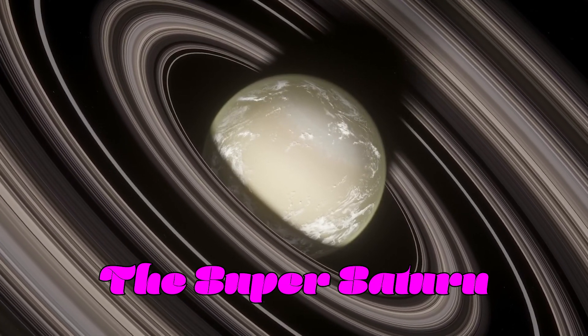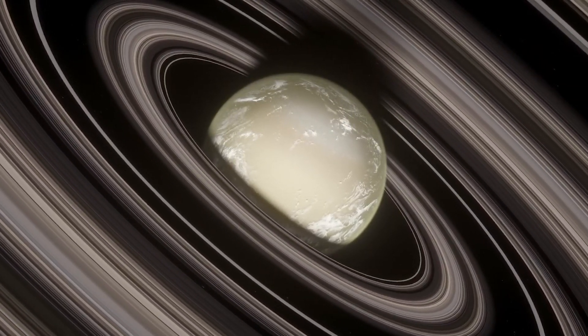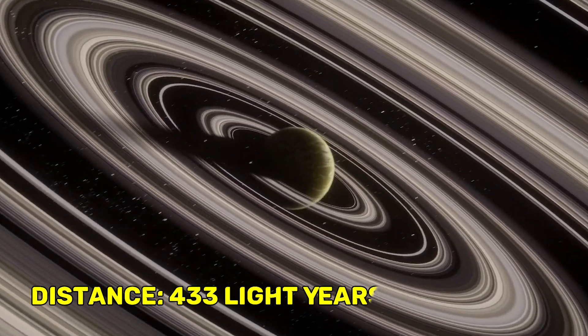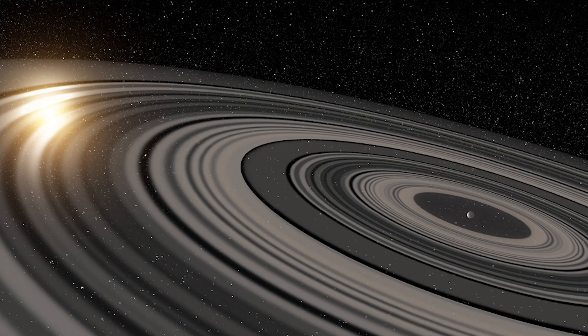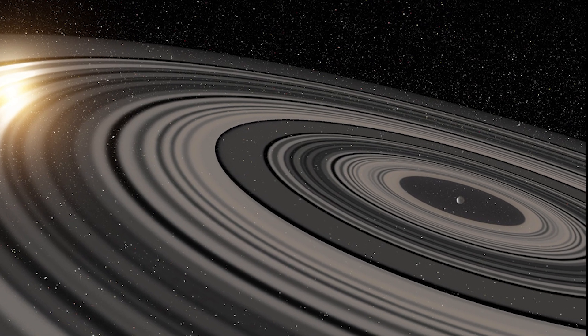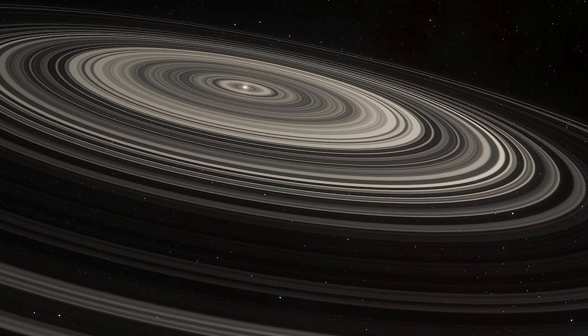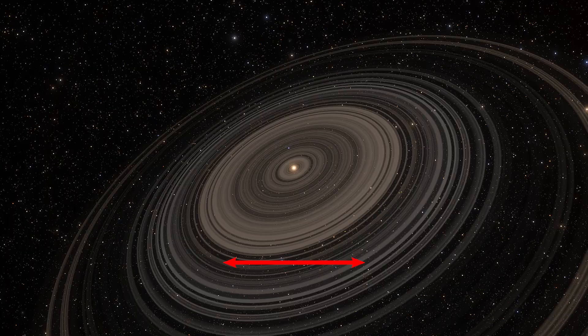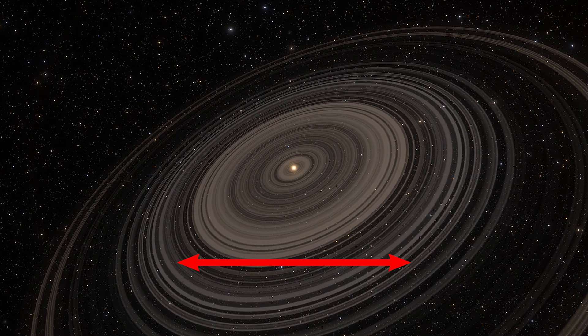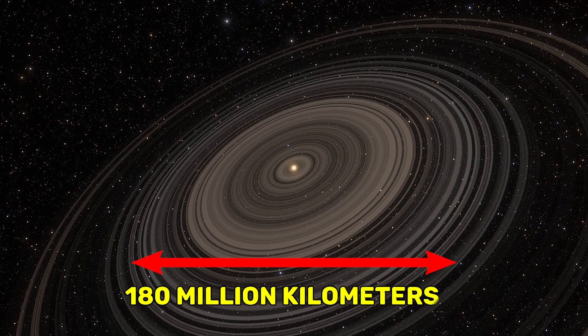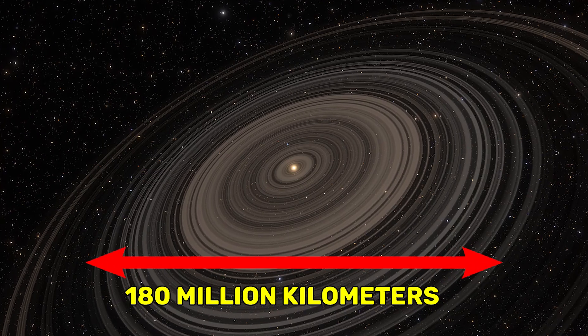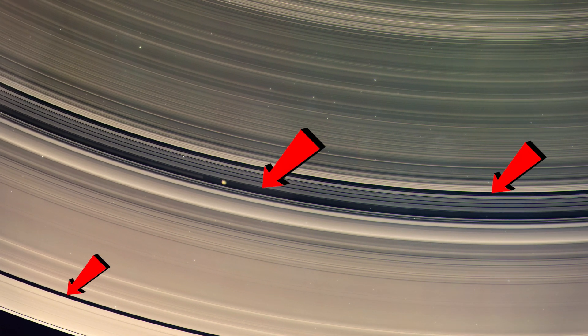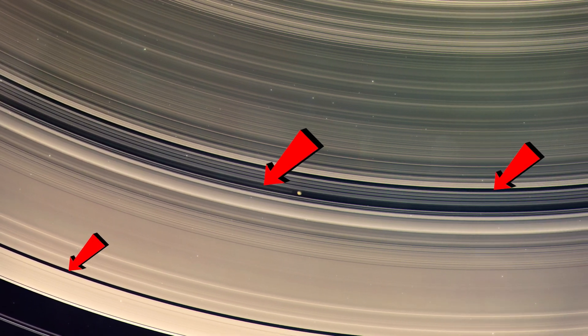Also known as the Super Saturn, this planet is located 433 light-years away from Earth. It is 20 times more massive than Saturn, with a ring system that is roughly 200 times larger than Saturn's rings. The rings of Super Saturn span 180 million kilometers wide. These wide gaps between the rings indicate the presence of several moons.